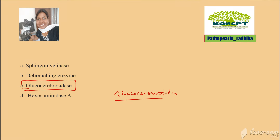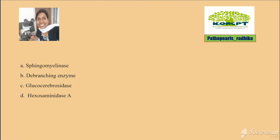So you can have hepatosplenomegaly, pancytopenia, and lymphadenopathy in Gaucher's disease. You can also have bone involvement and bone pain. Before looking into the other options, let me give you a small introduction about storage disorders.